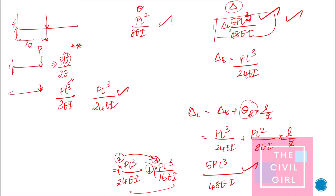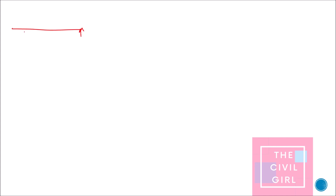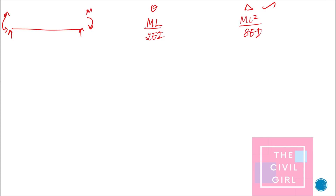Now, the next special type is a simply supported beam subjected to two equal and opposite moments M at both ends. Because the loading is symmetrical, the slope is the same at both ends: theta equals ML divided by 2EI. The maximum deflection is ML² divided by 8EI.